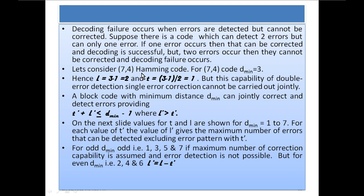For the (7,4) Hamming code, d_minimum = 3, giving error detection capability L = 2 and error correction capability T = 1. However, double error detection and single error correction cannot be carried out jointly. A block code with minimum distance d_minimum can jointly correct and detect errors provided that t' + L' ≤ d_minimum − 1, where L' > t'.